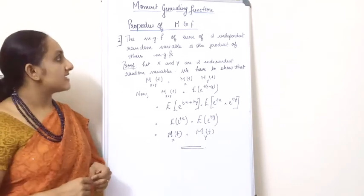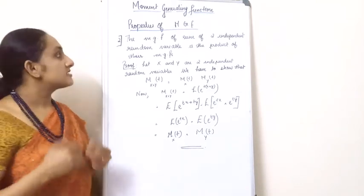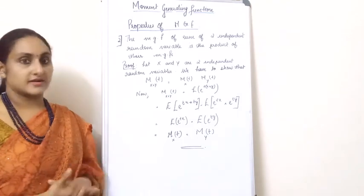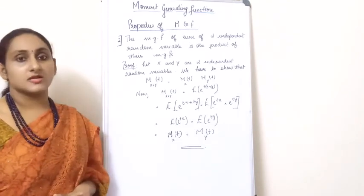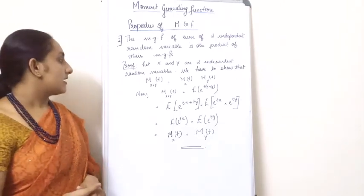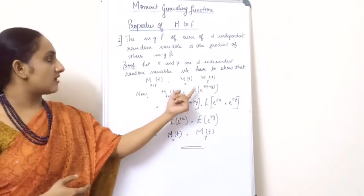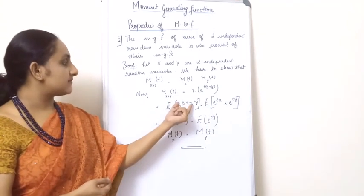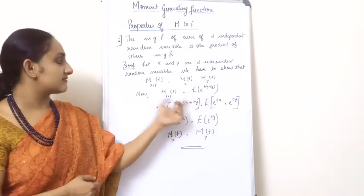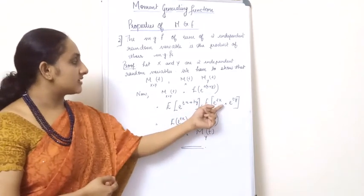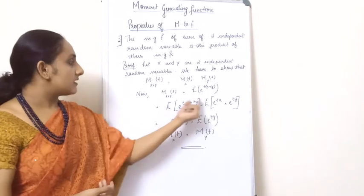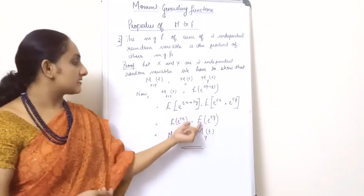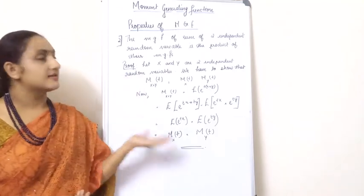The second property of the MGF is that the MGF of the sum of two independent random variables is the product of their individual MGFs. If x and y are two independent random variables, we show that M_t(x+y) equals M_t(x) multiplied by M_t(y). M_t(x+y) equals expectation of e raised to t(x+y), which equals expectation of e raised to (tx+ty), which equals expectation of e raised to tx multiplied by e raised to ty. Since x and y are independent, this equals M_t(x) times M_t(y), hence the theorem is proved.